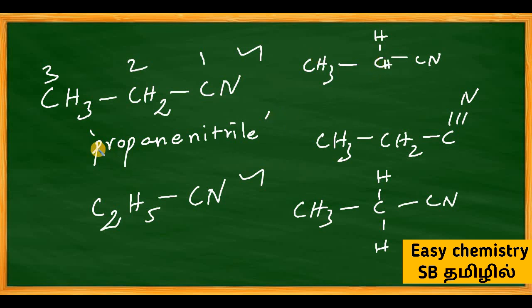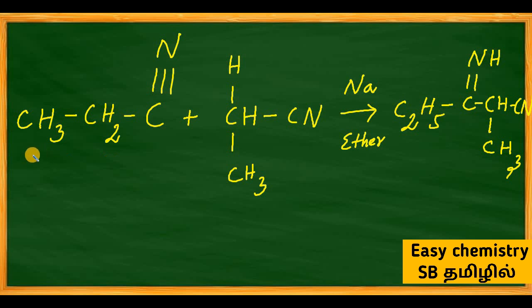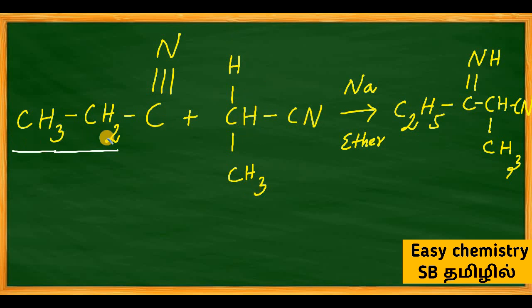Now, looking at the reaction: we take two moles of propanenitrile — CH3-CH2-C≡N reacting with itself. The same reactant undergoes self-condensation. We use Cx notation to distinguish the two molecules for clarity, so the product is easier to identify.